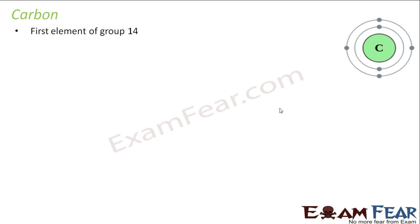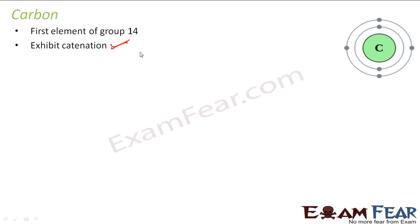Carbon is the first element of group 14. The first is always special. It exhibits catenation as a very critical property. That is why we have the whole of organic chemistry — because of the catenation property. It makes so many compounds.